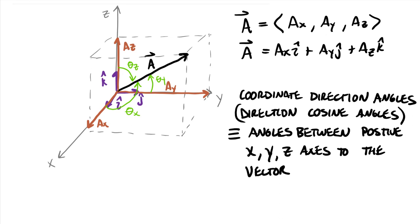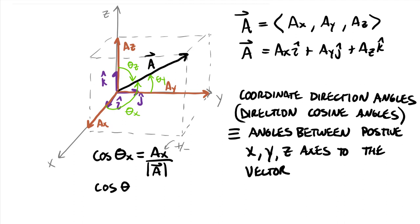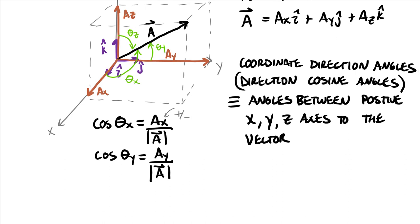The name 'direction cosine angles' comes from this equation: the cosine of theta_x equals the component of vector A in the x-direction divided by the total magnitude of A. Note that the top term (A_x) can be positive or negative, while the bottom (the magnitude) is always positive. Similarly, cosine of theta_y equals A_y divided by the magnitude of A, and cosine of theta_z equals A_z divided by the magnitude of A.